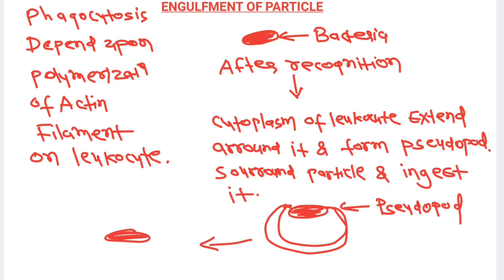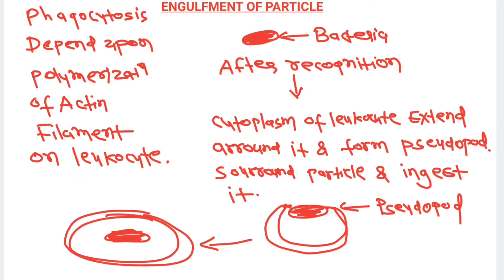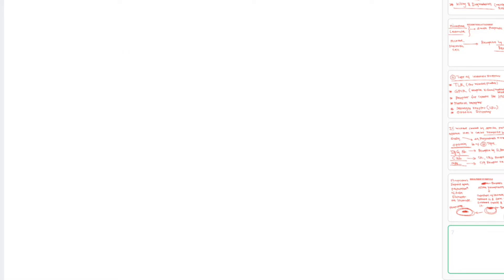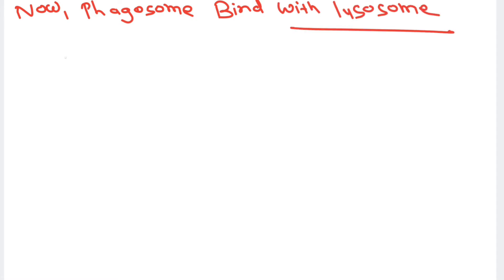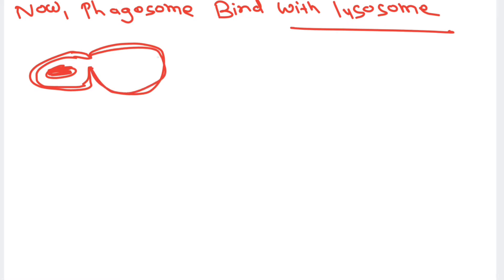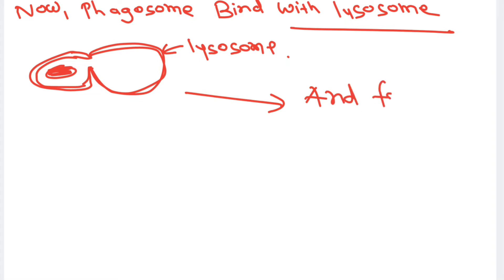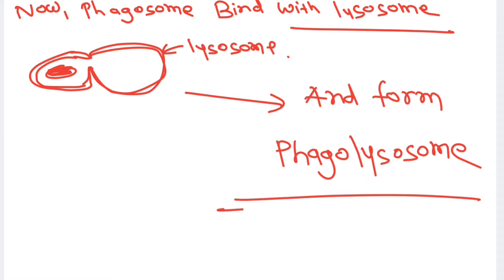After pseudopod formation, the cell ingests the particle and forms a phagosome. In the macrophage or neutrophil, this phagosome binds with the powerful organelle, the lysosome, to form a phagolysosome. Once the phagolysosome is formed, the phagocytic cell can perform killing and degradation.